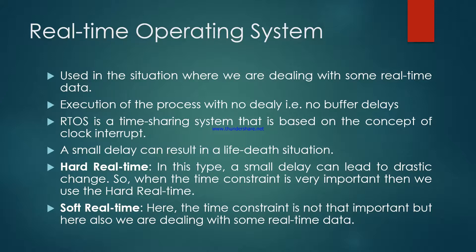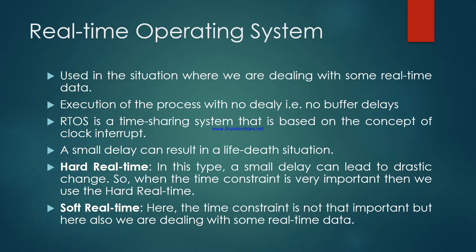There are two types of real-time operating system. The first one is the hard real-time and the second one is the soft real-time. In hard real-time, a small delay can lead to a drastic change, so when timing is very critical, we use the hard real-time system. The processes must be executed within the timeframe and delay is not allowed. In soft real-time systems, the time constraint is important but not as critical as in hard real-time systems, though we are still dealing with real-time data.